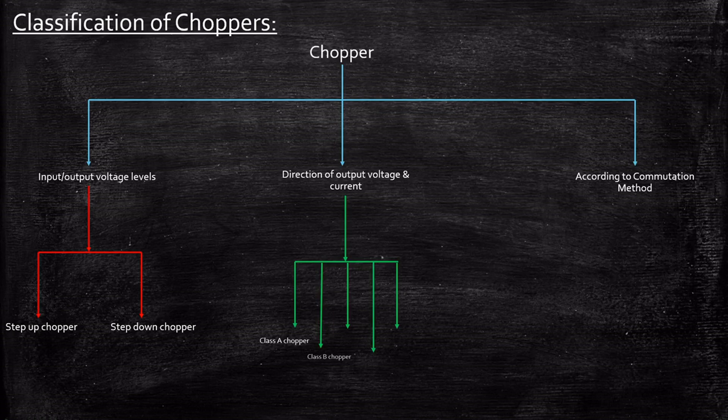They are also called as type A chopper. The output voltage and current can be in the negative, that is the output voltage can be positive but the current can be negative. So they are called as class B chopper. We also have something called as class C chopper where the output voltage is always positive. The current can be positive or negative, meaning they can operate in two quadrants, that is first and second.